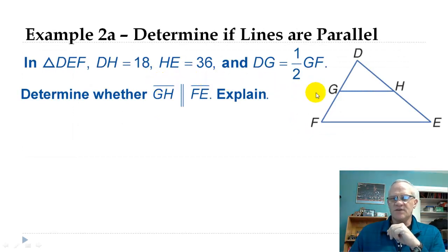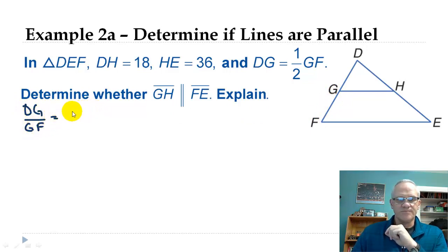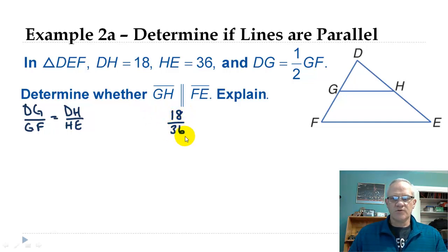So we'll take a look at a few quick examples there and see how we can make that. So notice now here, it doesn't tell us that GH is parallel to FE. It's saying, is it? So in order to make these two lines parallel, we have to make a proportion like DG over GF. DG over GF has to equal DH over HE. So if we can show that this is true, then we'll know that they're parallel.